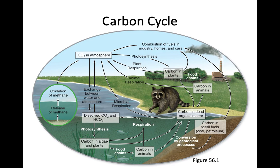Some organic carbon in dead organisms isn't fully returned to the atmosphere — it becomes buried in the ground and undergoes geologic processes that turn it into coal and oil, which are fossil fuels. Over a very long period of time — millions of years — this continual storage of carbon reduces the total amount of CO2 in the atmosphere. However, with the burning of fossil fuels for coal, heat, and gas, there's an increase in the amount of carbon entering the atmosphere as CO2, resulting in a shift in the form of carbon in the cycle.